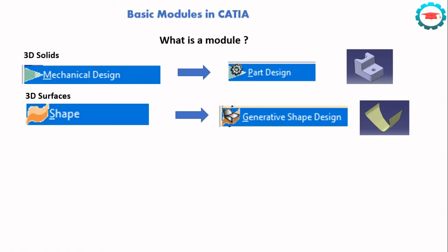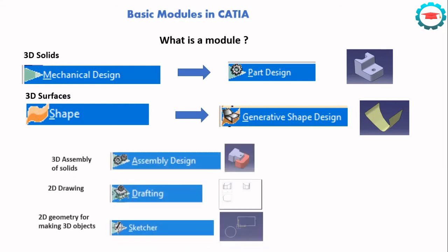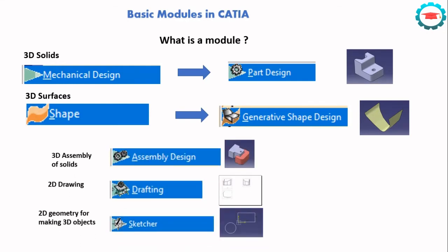There are other allied modules like Assembly Design, which is used for the 3D assembly of solids. And then there is the Drafting module, which is used for making the 2D drawings of solids, surfaces, or even assemblies. Sketcher is a sub-environment within Part Design and Generative Shape Design, which is used to make 2D geometry for creating the 3D objects in those two modules.